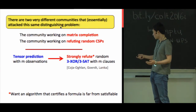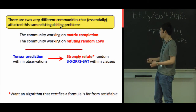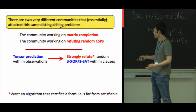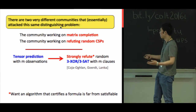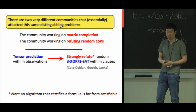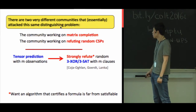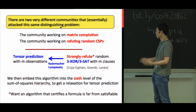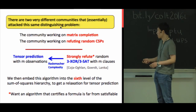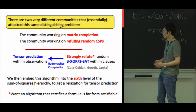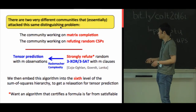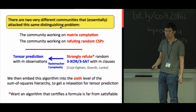On the hardness side, because we don't know how to strongly refute a random 3-XOR instance, tensor prediction cannot be done with fewer than N^1.5 observations. On the algorithmic side, prior work has designed algorithms that strongly refute random 3-XOR instances with M = N^1.5 clauses (up to log factors). The authors embed this algorithm into the sixth level of the sum-of-squares hierarchy, yielding a relaxation for the tensor prediction problem. The key tool used is spectral methods / pseudo-calibration complexity.